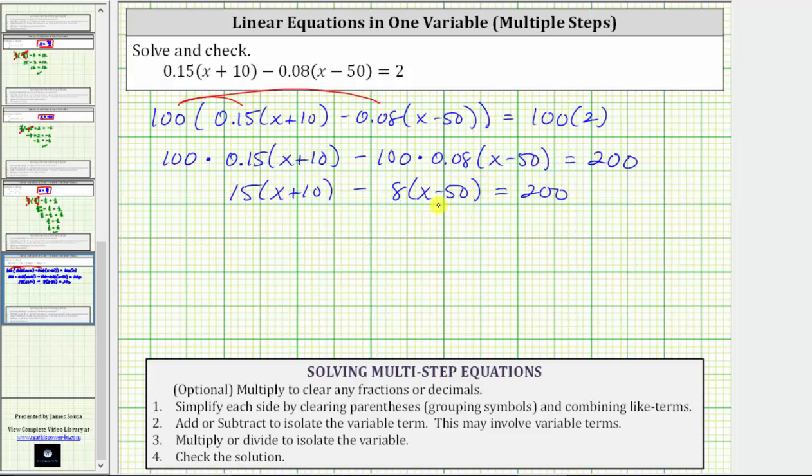So now we go back to the left side of the equation and simplify by clearing the parentheses and combining like terms. So here we distribute 15, and here because of the subtraction, we will think of distributing negative 8.